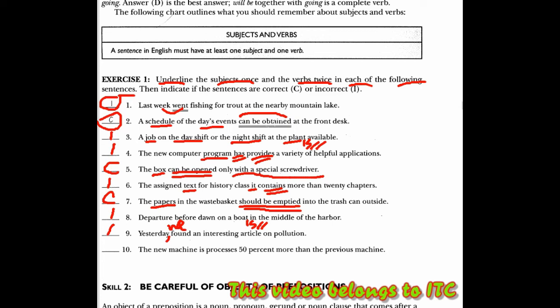Lalu pada bagian nomor 10, di sini verbnya double. Jadi ini juga incorrect. Maka harusnya machine adalah subjek. Is, harusnya is-nya is 50% atau the new machine processes 50%. Jadi di sini, kata kerjanya double. Jadi, salah satu harus dihilangkan. Harusnya dia, the new machine is 50% more than the previous machine, atau the new machine processes 50% more than the previous machine.